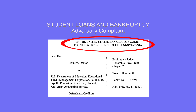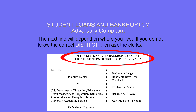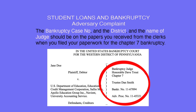Look at the example of an Adversary Complaint. The heading will always be the United States Bankruptcy Court. However, the next line will depend on where you live. If you do not know the correct district, ask the clerks. The bankruptcy case number, the district, and the name of the judge should be on the papers you received from the clerks when you filed your paperwork for the Chapter 7 bankruptcy.